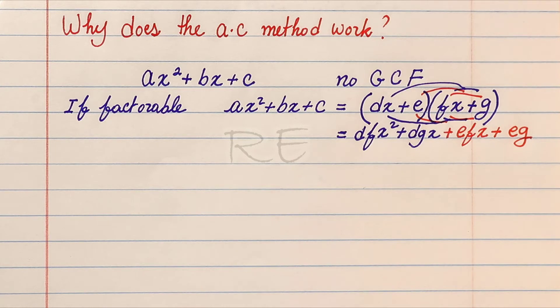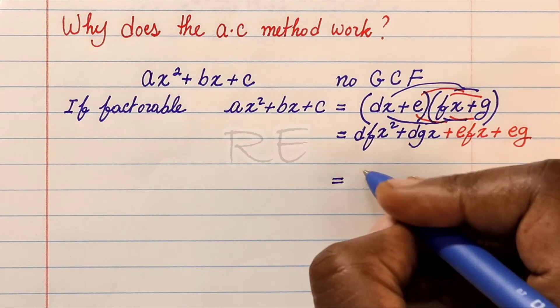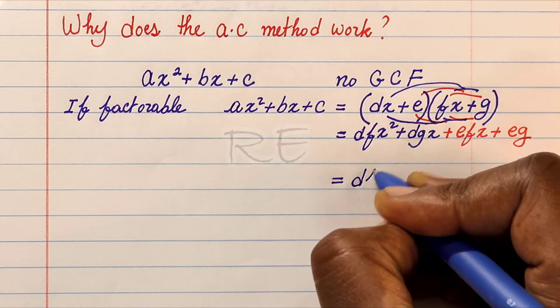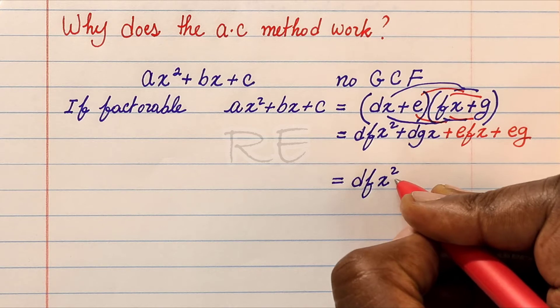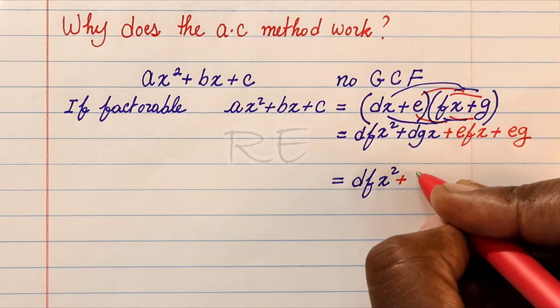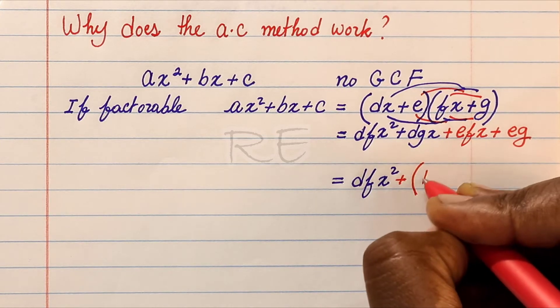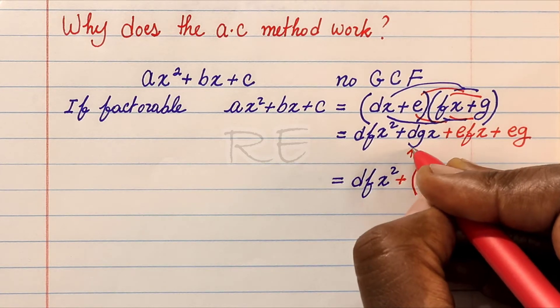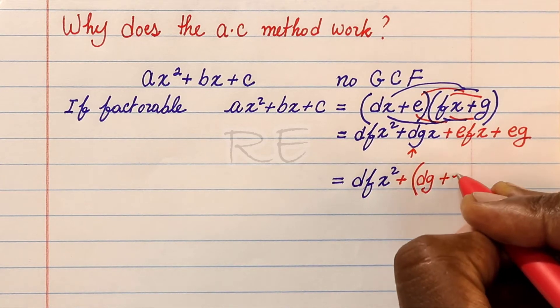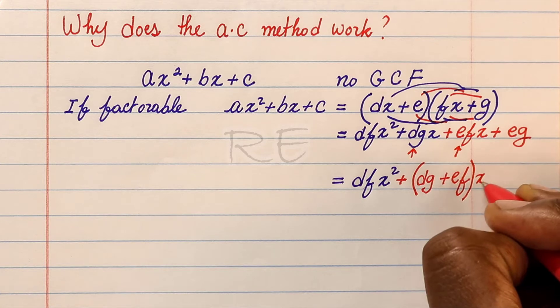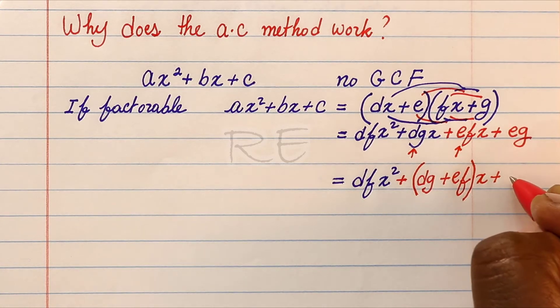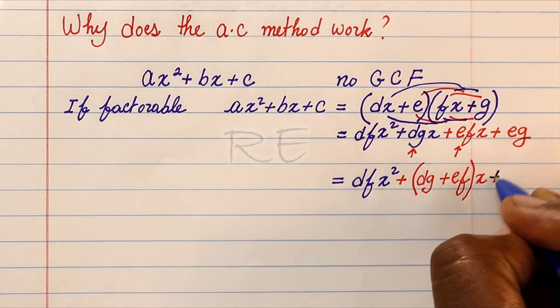Now we're going to combine the middle terms since they share x as a common factor. So we're going to keep the dfx squared, then factoring x, we have dg plus ef multiplied by x, plus eg.